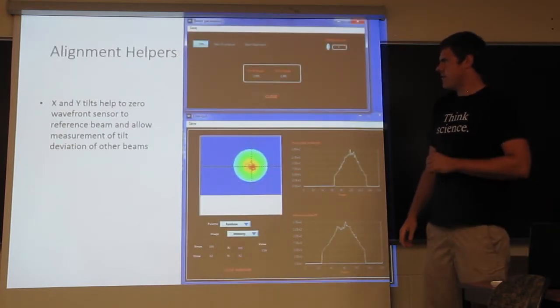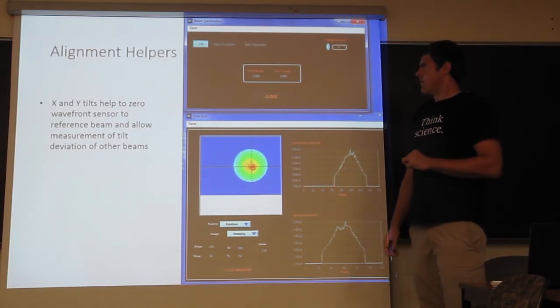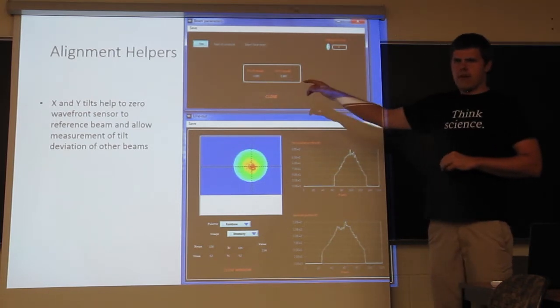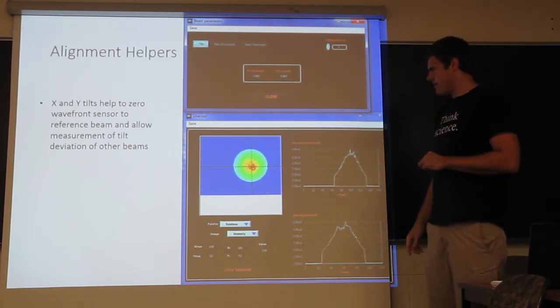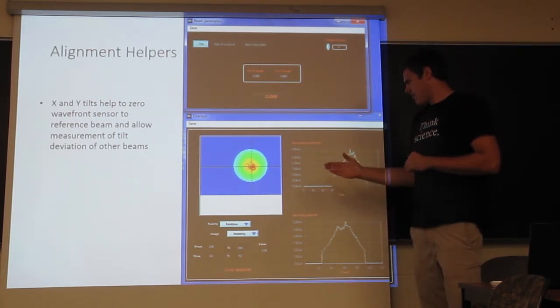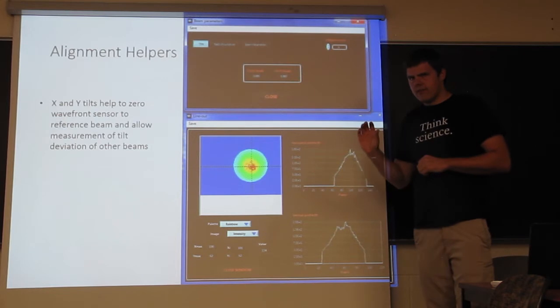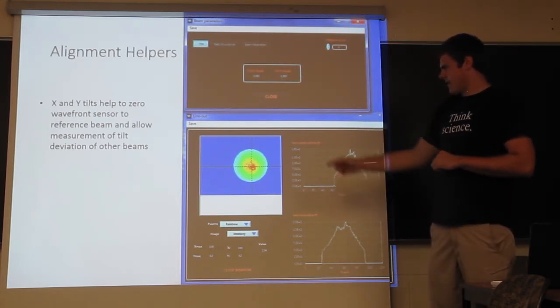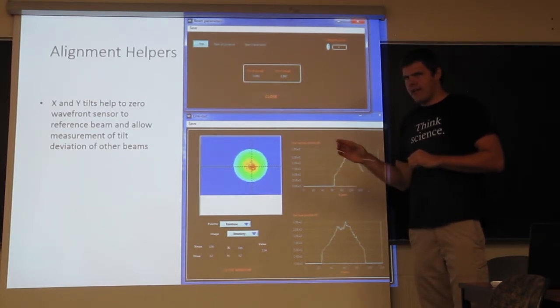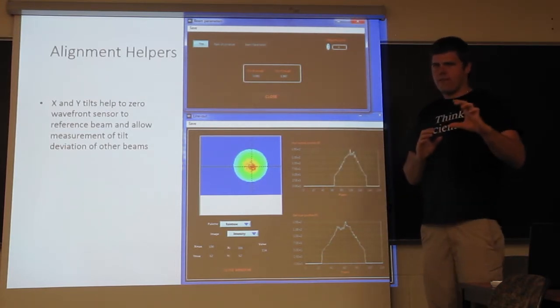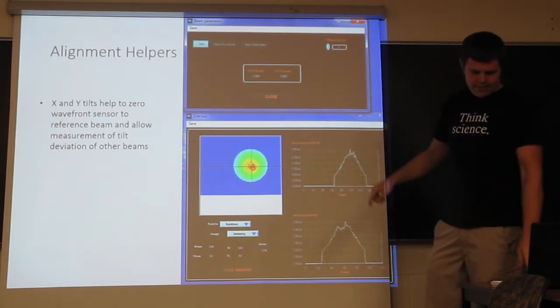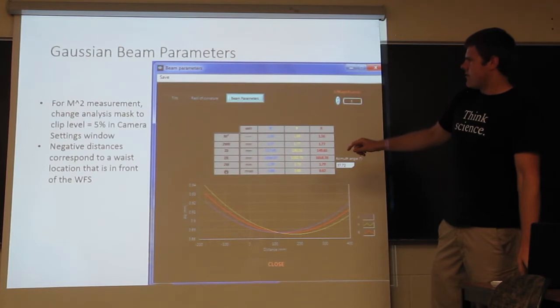So, often, we use the wavefront sensor to help us align things, so a lot of the buttons, beam parameters, look at the different X and Y tilts, so this is usually one of the first couple of Zernike's, and then you can look at the reconstructed beam intensity profile to help you know where it is on the camera. You can select this cross, put it at the maximum or any point on there, and leave it there while you look at a different beam and try to use it to help you align. You can calculate the radius of curvature, and then also the beam parameters.